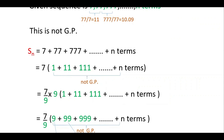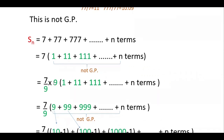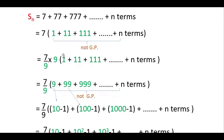So again you have to convert this into GP. For that, multiply by 9 and divide by 9. So now you have 7 by 9 into (9 plus 99 plus 999 plus etc., n terms). Check here again: 99 by 9 and 999 by 99 give different common ratios, so this is also not GP.